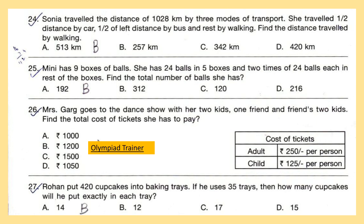Question 27: Rohan put 420 cupcakes into baking trays. If he uses 35 trays, then how many cupcakes will he put exactly in each tray?